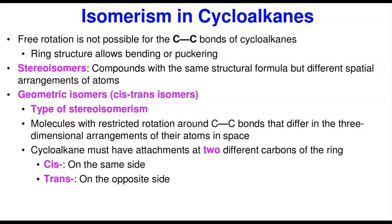Now let's talk about isomerism in cycloalkanes. They do undergo structural isomerism and an additional type called stereoisomerism. The type occurring in cycloalkanes is geometric isomerism. Recall that for open-chain alkanes, the carbon-to-carbon single bond can easily rotate, causing different conformations — but those different conformations represent the same compound.